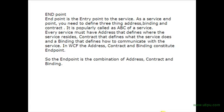Those three things are Address, Binding, and Contract — popularly called the ABC of a service, where A stands for Address, B stands for Binding, and C stands for Contract. Every service must have an address that defines where the service resides. Contract defines what the service does — what the service provides to the outside world. Binding defines how to communicate with the service, that is, which protocol should be used.